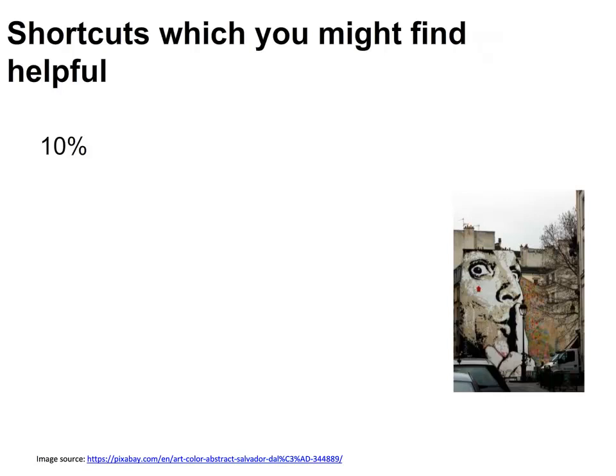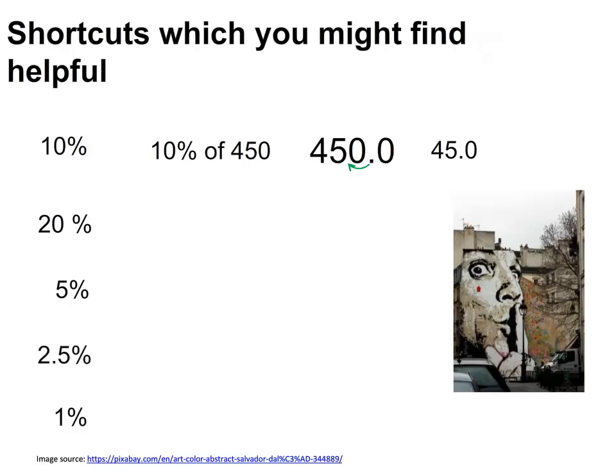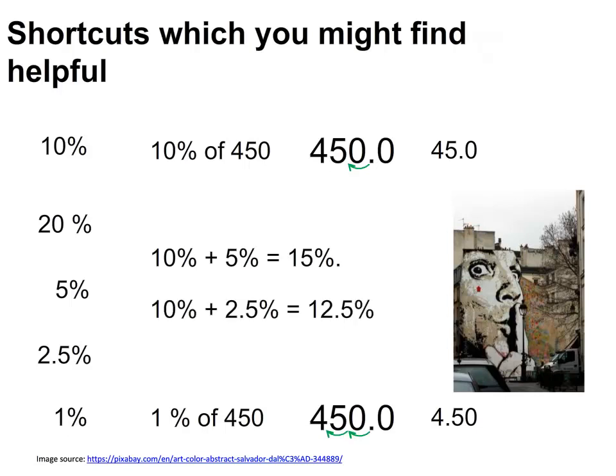Find 10%. That's easy. The decimal point moves one place to the left. So 10% of 450 is 45. Many percentages can be calculated quickly using 10% as a starting point. Double 10% to get 20%. Halve 10% to get 5%. Halve 5% to get 2.5%. To get 1%, move the decimal point two places to the left. So 1% of 450 is 4.5. Add 10% and 5% to get 15%. Add 10% and 2.5% to get 12.5%. Subtract 2 times 1% from 20% to get 18%. Other percentages can be found by adding or subtracting various combinations of these.